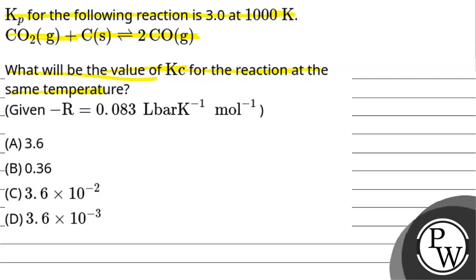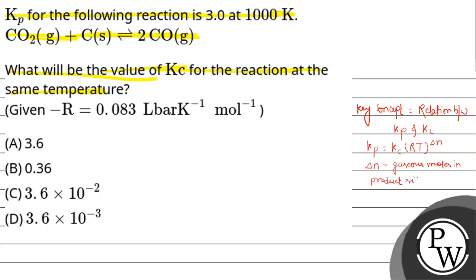First of all, we will see the key concept of this question. The key concept is the relation between Kp and Kc, which states: Kp equals Kc multiplied by RT to the power delta n, where delta n is the number of gaseous moles on the product side minus the number of gaseous moles on the reactant side.